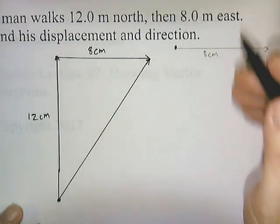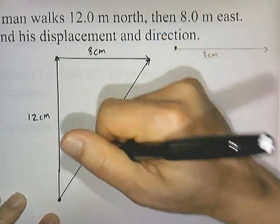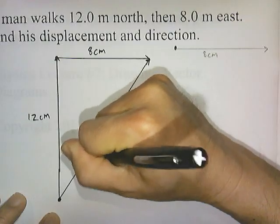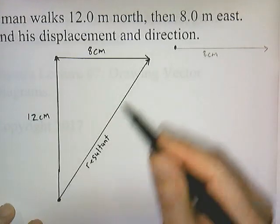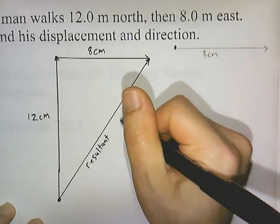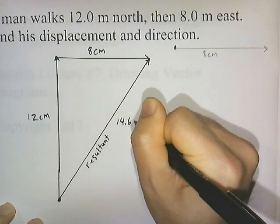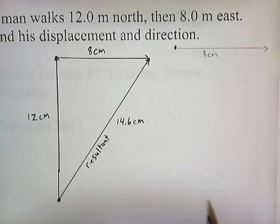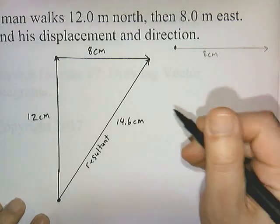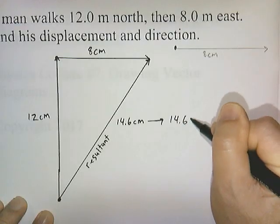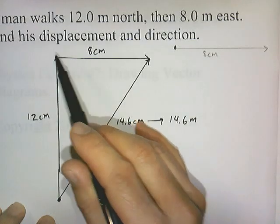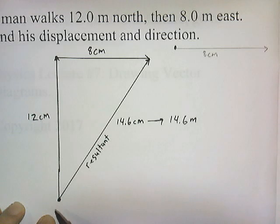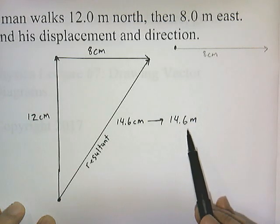The final line drawn is called the resultant. If you measure the length of the resultant, it would be approximately 14.6 centimeters. You may be off a little but if you're close, you're doing all right. Converting this to meters, we call this 14.6 meters. So the man's displacement — who walked 12 meters and then 8 meters — from where he started to where he ended is 14.6 meters.